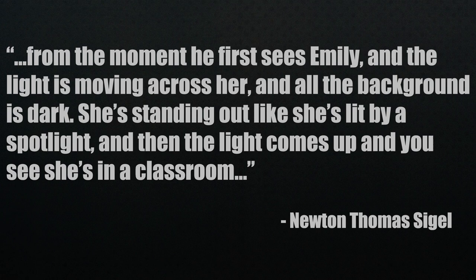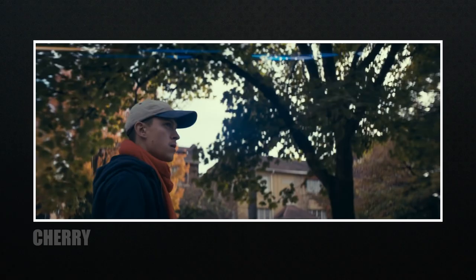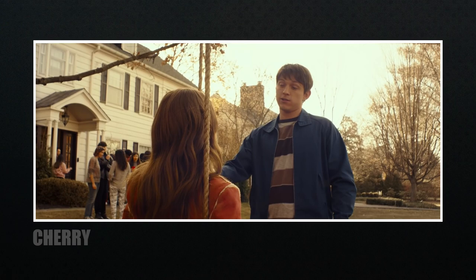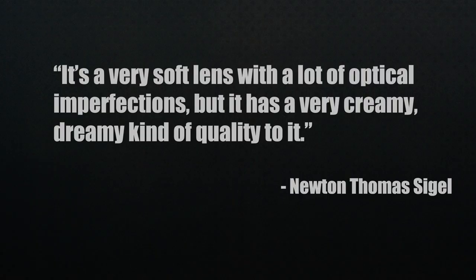Part of this look came from the very old Todd AO anamorphic lenses — we're talking about the 1950s. If you look up these lenses, you'll see they hold some unique characteristics. It's a very soft lens with a lot of optical imperfections, but it has a very creamy, dreamy kind of quality to it. Those lenses were a good choice, and combined with slow evolving shots using a dolly and steadicam, gave this chapter what it needed.